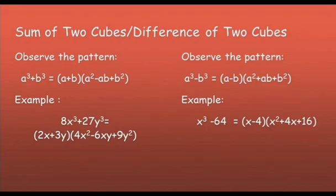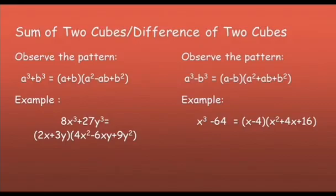For the difference of two cubes, the pattern is a cubed minus b cubed. The first factor is a minus b — compared to the sum of two cubes where the first factor is a plus b, that is their difference. The same process applies to get the second factor: square a to get a squared; multiply a times b to get ab, but this time the middle term is positive, unlike in the sum of two cubes where it is negative. Then square b to get b squared.